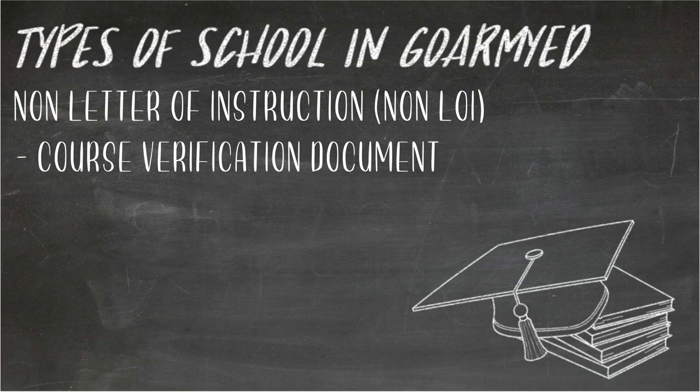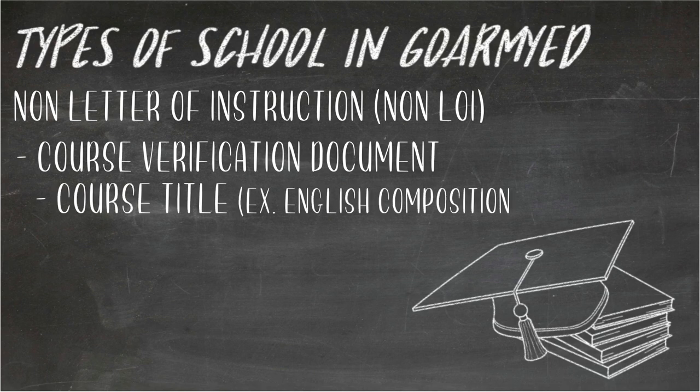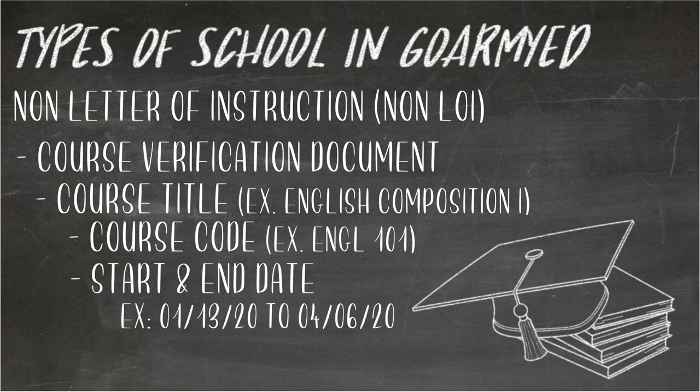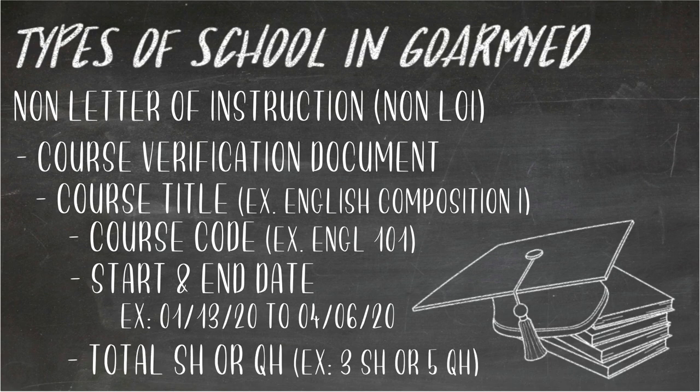You will also need a course verification document. This document must show the course title — for example, English 101, where the course title is English Composition 1. It must also show the course code (e.g., ENGL 101), start date (e.g., January 13, 2020), end date (e.g., April 6, 2020), and total semester or quarter hours — for example, 3 semester hours or 5 quarter hours.